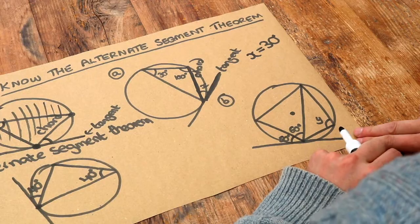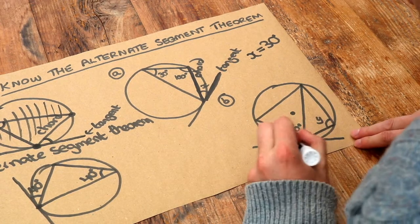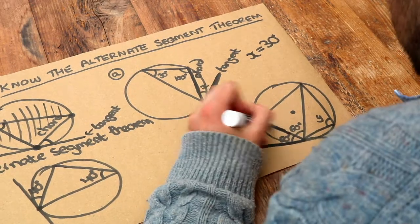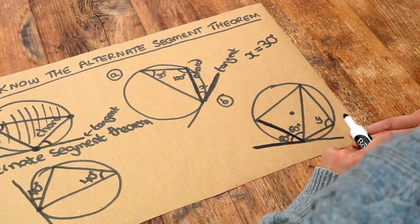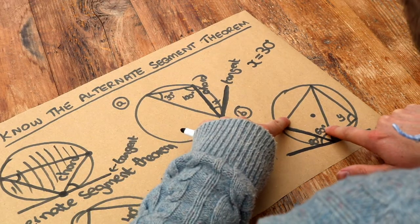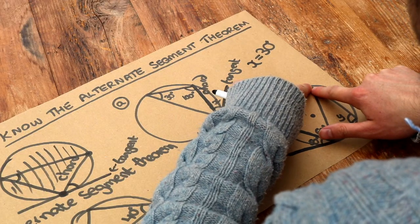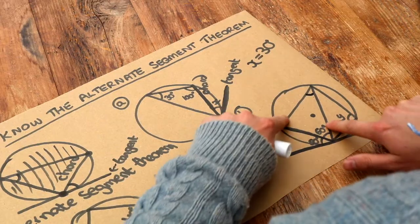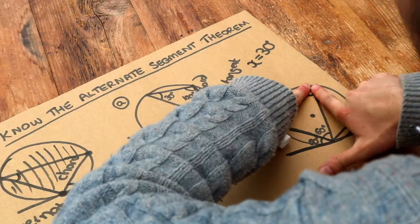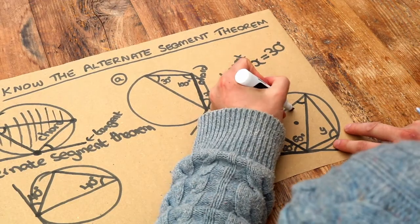Where they meet, we can see that angle is 30, so x must also be 30 degrees. The 100 degrees we're not actually going to use. For the next one, let's first identify the tangent and the chord. We know the angle between this tangent and this chord is 50 degrees. We fire from the two ends of the chord and follow the lines until our fingers meet at the circumference of the circle — that angle where they meet must be equal to 50 degrees.